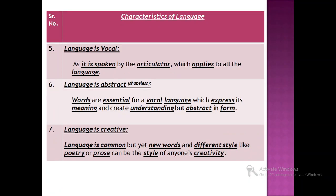The fifth characteristic is language is vocal. Language is a combination of two different things: first, the words which we say, and second, the words which we write. Speaking language and script to write are two different dimensions of the same language. Language is vocal — it is articulatory, meaning it is spoken by the articulators. Articulators are all those organs which help you pronounce the sounds of a language, and this applies to all languages in the world.